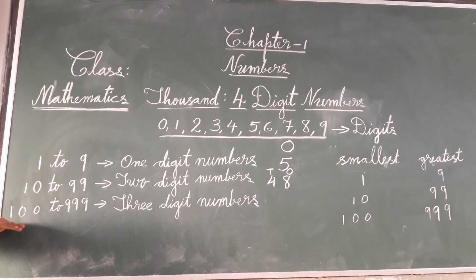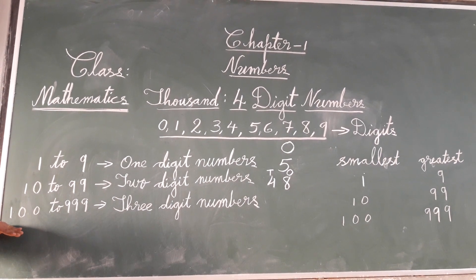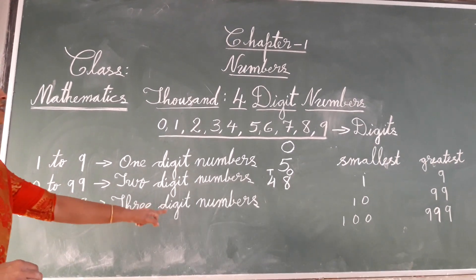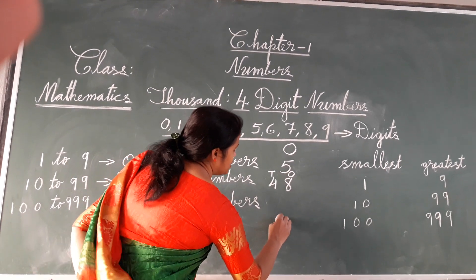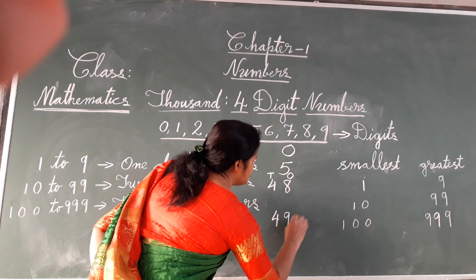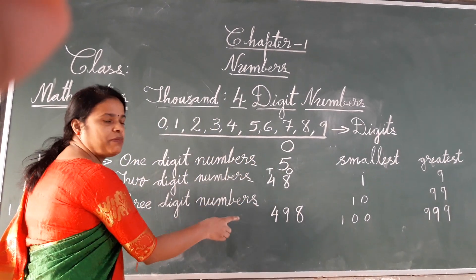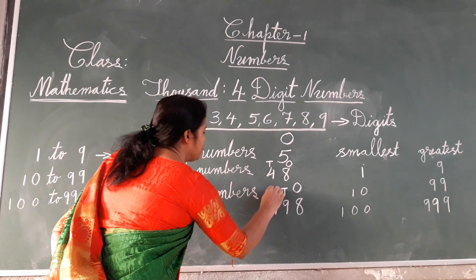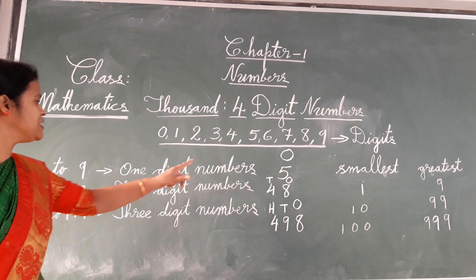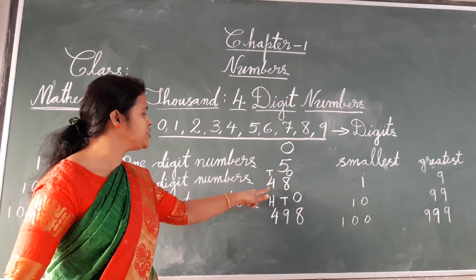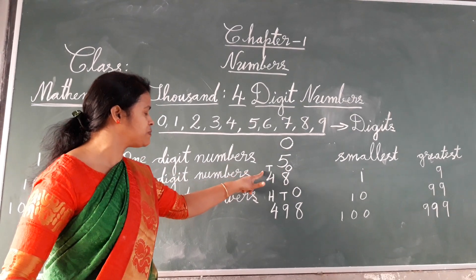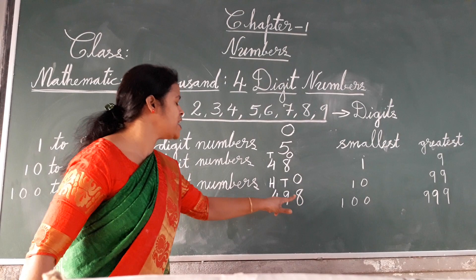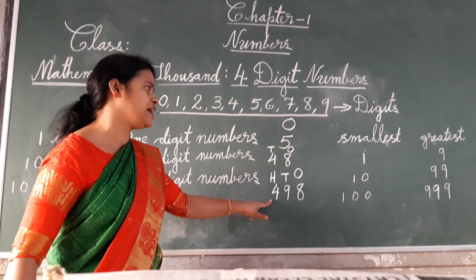Three digit numbers begin from 100 and end with 999. This number is called a three digit number. For example, I have written 498. This number has three places — that is, ones place, tens place, and hundreds place. So a one digit number has one place, a two digit number has two places, and a three digit number has three places.